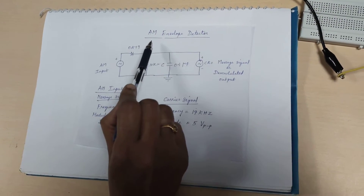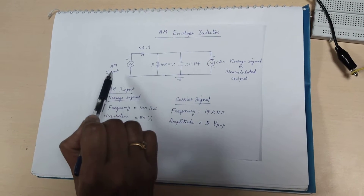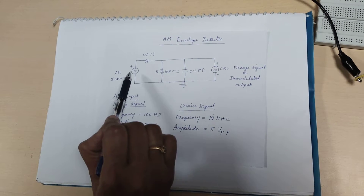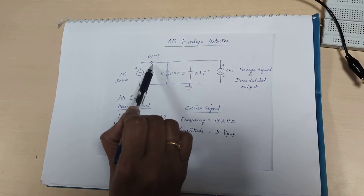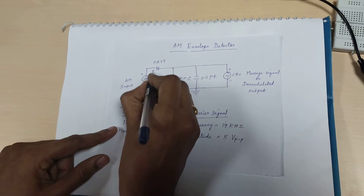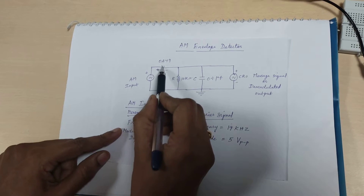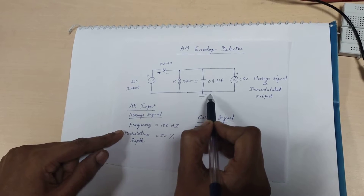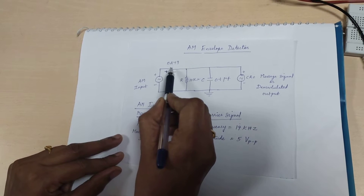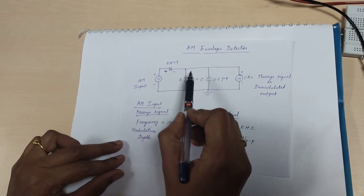This experiment is based on AM envelope detection. The amplitude modulated signal is given as input to the circuit. The AM input is first fed to the diode, which is OA79. The diode has positive and negative terminals and is connected to the RC charging network. When the AM signal is positive, the diode will be forward biased and will conduct.